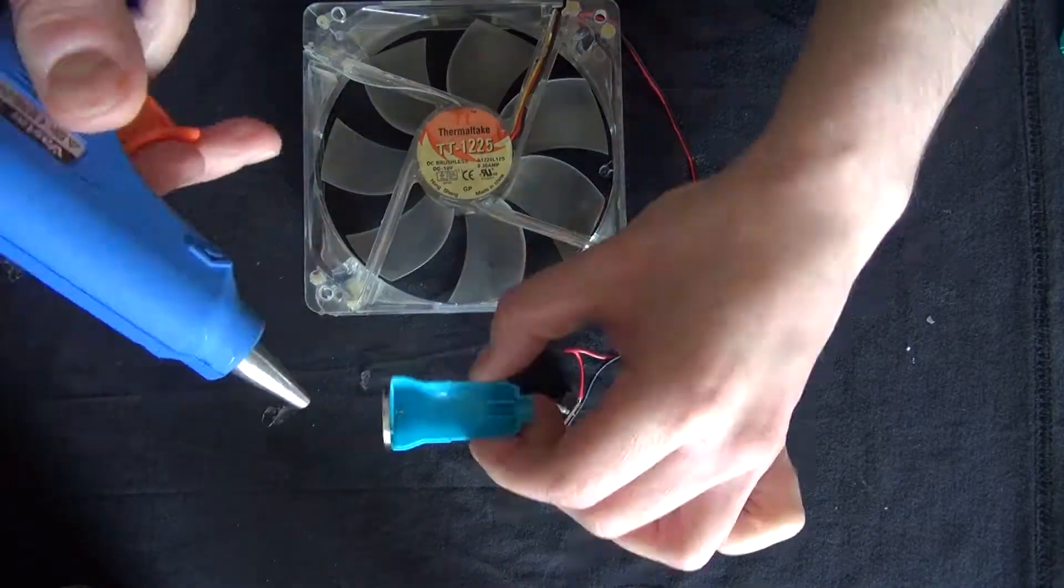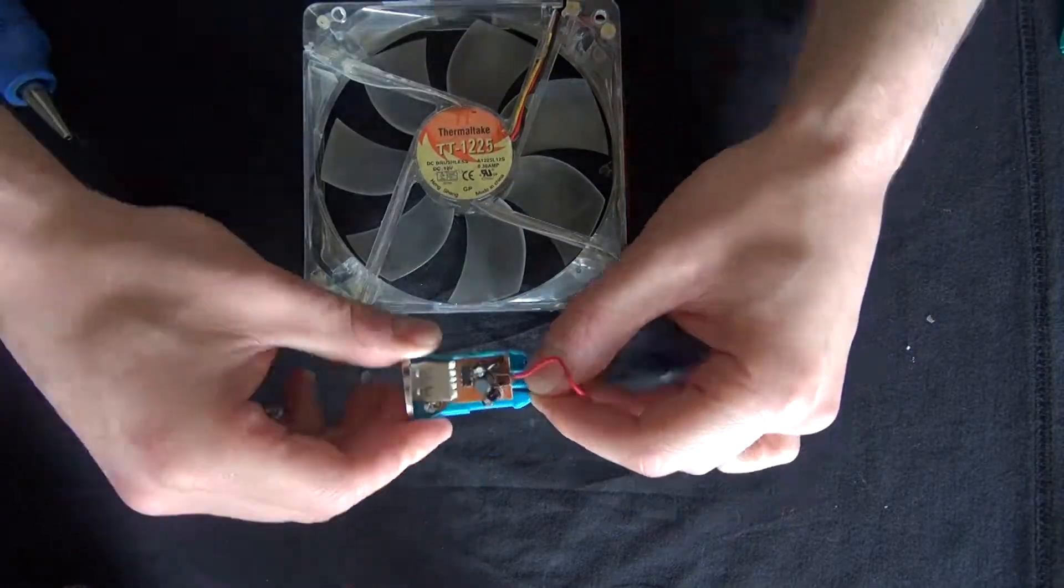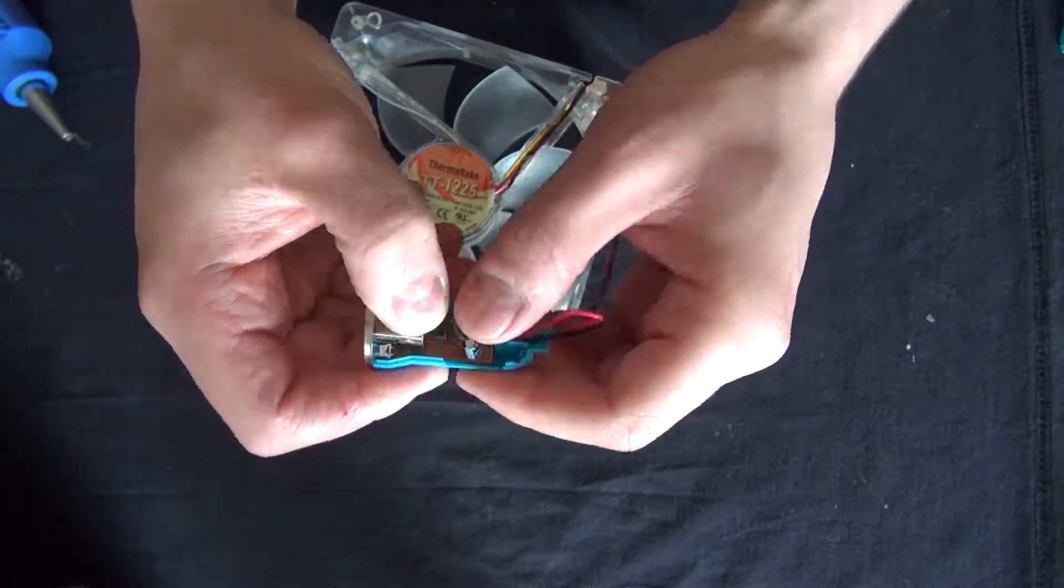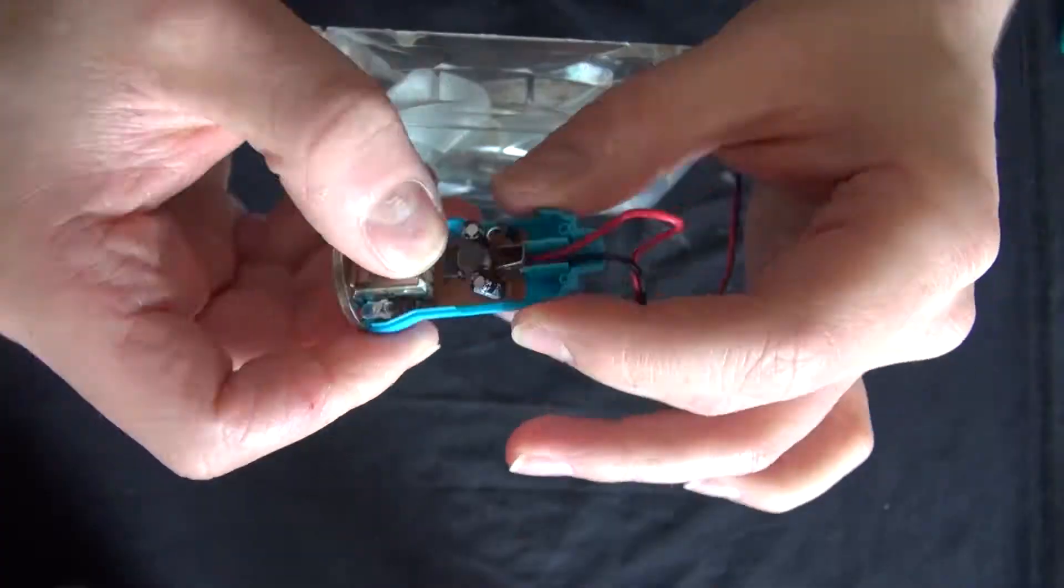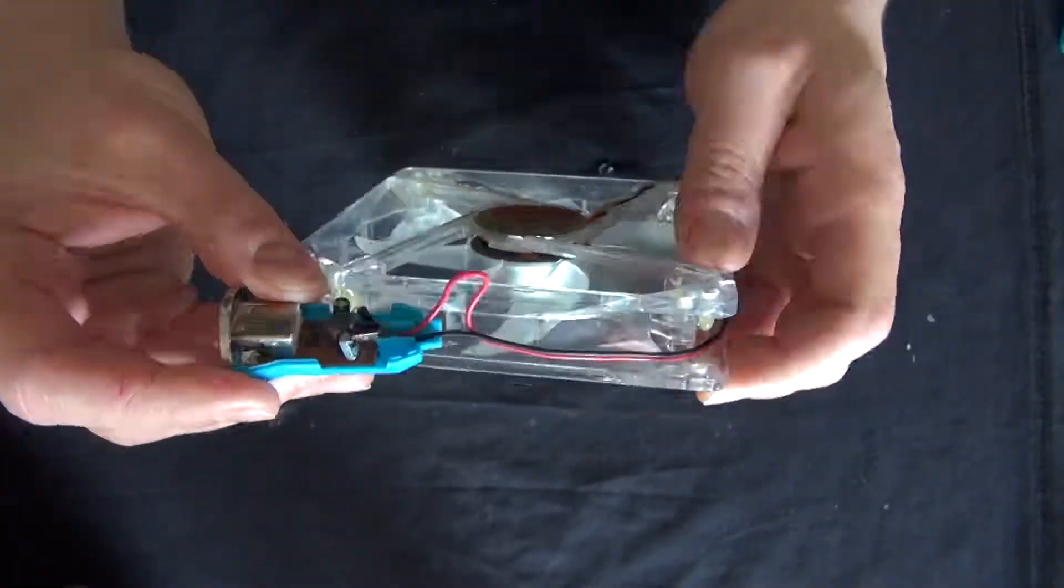And now let's go ahead and glue the PCB back into the housing. There we go. Now it's glued into place. Let's secure the wires a little bit. Perfect.